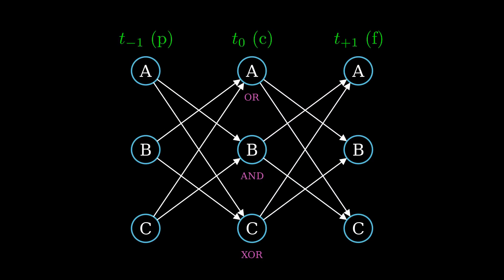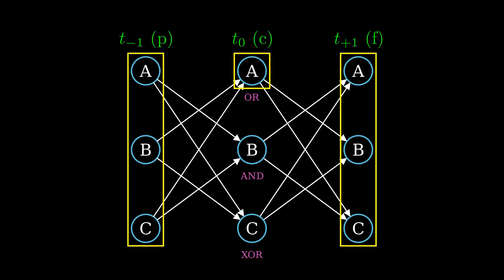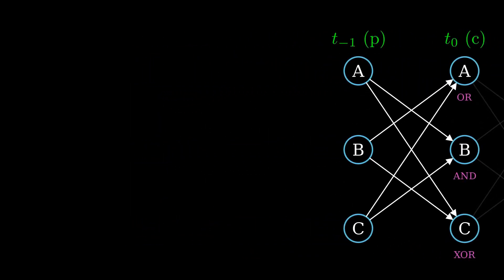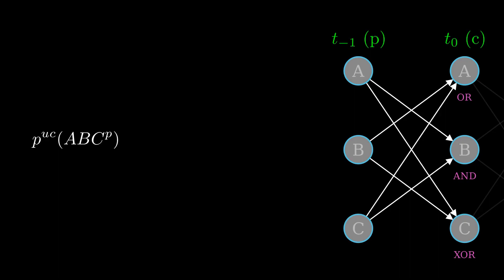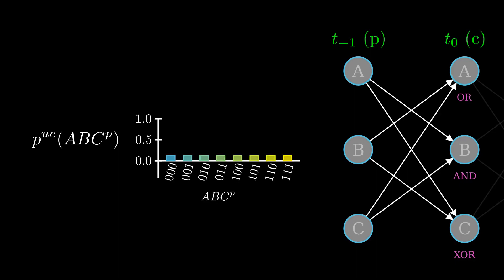In order to calculate the amount of integrated information in the system, we need to first evaluate the information generated by each single mechanism. This is done by looking at how much a given mechanism constrains the past and future states. Let's start with the past. Suppose we don't know anything about the current or past states, but we want to know the probability of a past state. This p means unconstrained probability, while this other p is to indicate that it's a past state. Since we have no additional information, we simply assume the distribution is uniform. Three binary outputs give us 8 states, each with probability 1 over 8. In IIT, this distribution is called the unconstrained past.